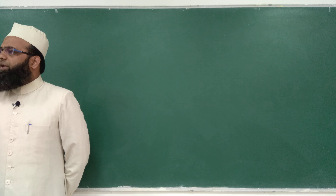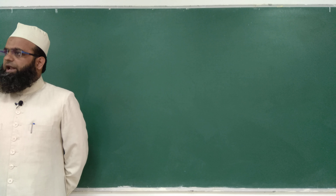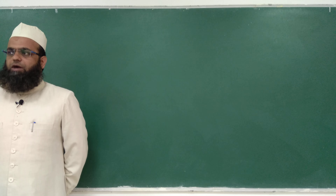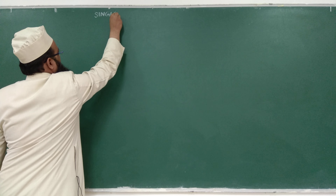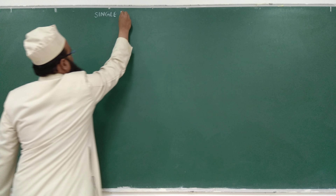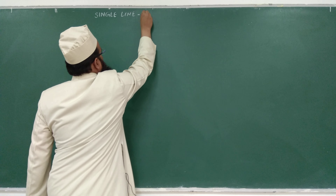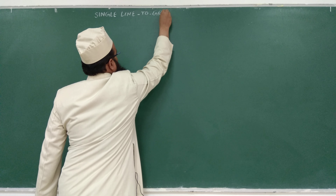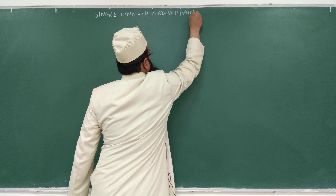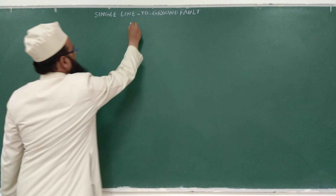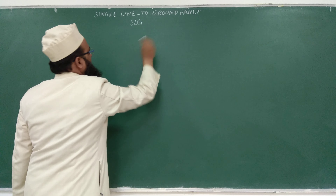So first analysis will be for LG fault — single line to ground fault. Unsymmetrical faults may be either SLG (single line to ground), line to line, or double line to ground. We will discuss them one by one. Today we will discuss the SLG fault — single line to ground fault, also known as SLG fault or simply LG fault.